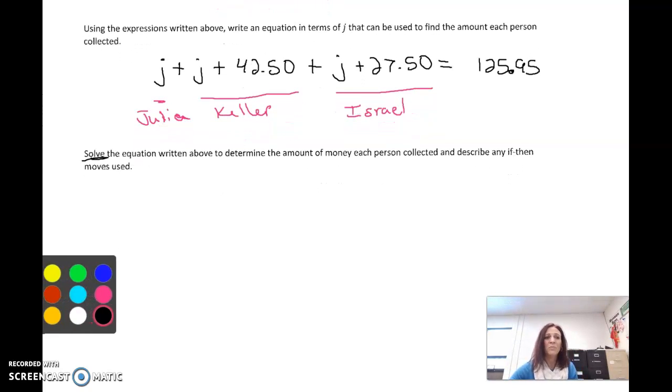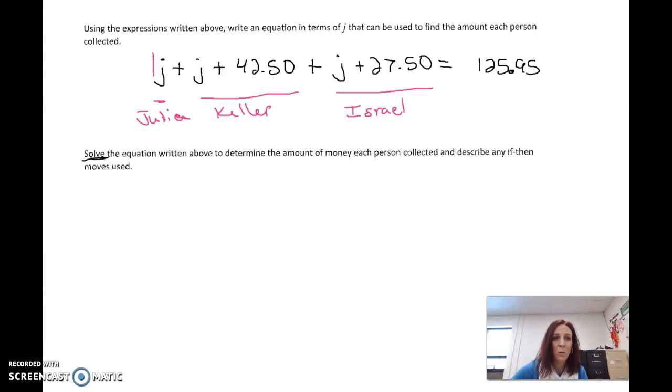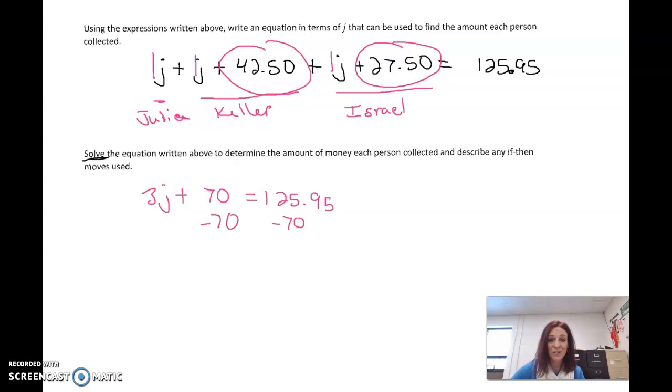Solve the equation. I'm going to simplify this equation. 1 J, 1 J, and 1 J works out to be 3 J's plus if I add $42.50 and $27.50 together, that was $70, and that equals $125.95. So now, solving our equations, if we're solving for J, it's adding 70, we subtract it. Whatever we do to one side, do the other. Because if this is true to start, then we can do those things. We have 3 J equals $55.95. And then this is multiplying, so we undo that with dividing. We're going to divide both sides by 3, and we get Julia, our J there, works out to be $18.65.